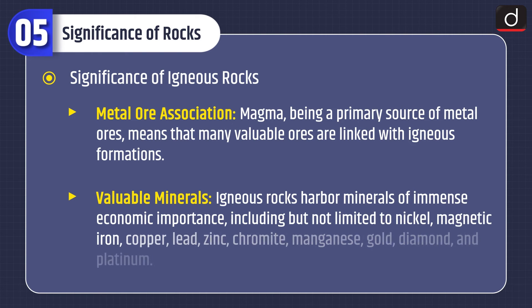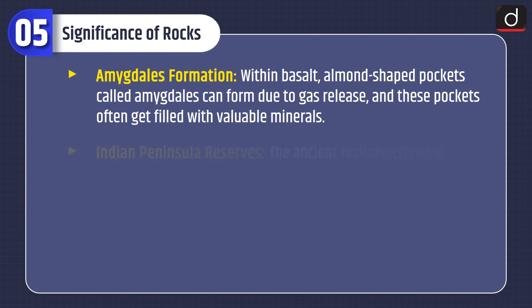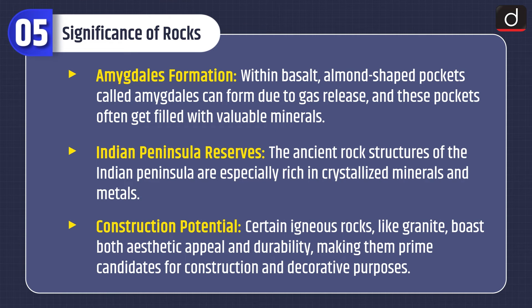Significance of igneous rocks: Metal ore association — magma being a primary source means many valuable ores are linked with igneous formations. Valuable minerals harboured include nickel, magnetic iron, copper, lead, zinc, chromite, manganese, gold, diamond, and platinum. Within basalt, almond-shaped pockets called amygdales can form due to gas release, often filling with valuable minerals. The ancient rock structures of the Indian peninsula are especially rich in crystallized minerals and metals. Certain igneous rocks like granite offer both aesthetic appeal and durability, making them prime candidates for construction and decorative purposes.